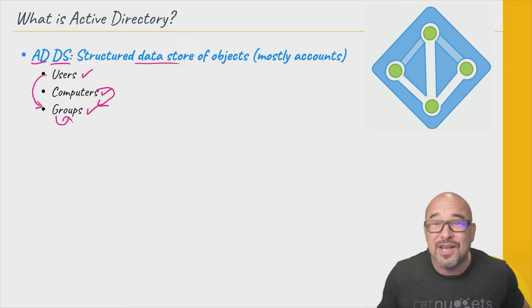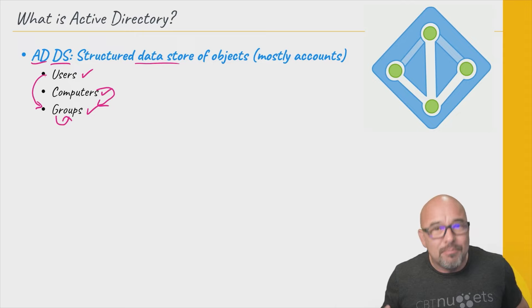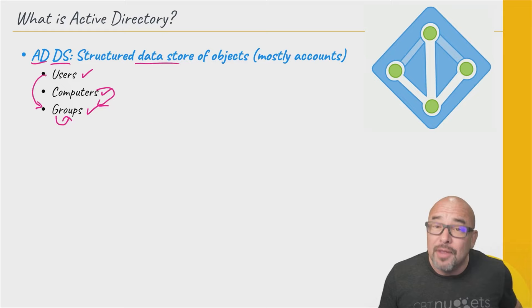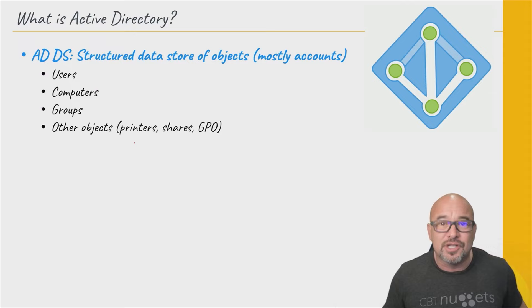Nesting groups is another way to say that. The basic idea with groups is that it's going to make most administration simpler later on when you start to assign permissions to various resources, such as file permissions, for example. There are other types of objects that go into Active Directory as well — we're not going to exhaust every type, but you can have printers that appear in Active Directory.